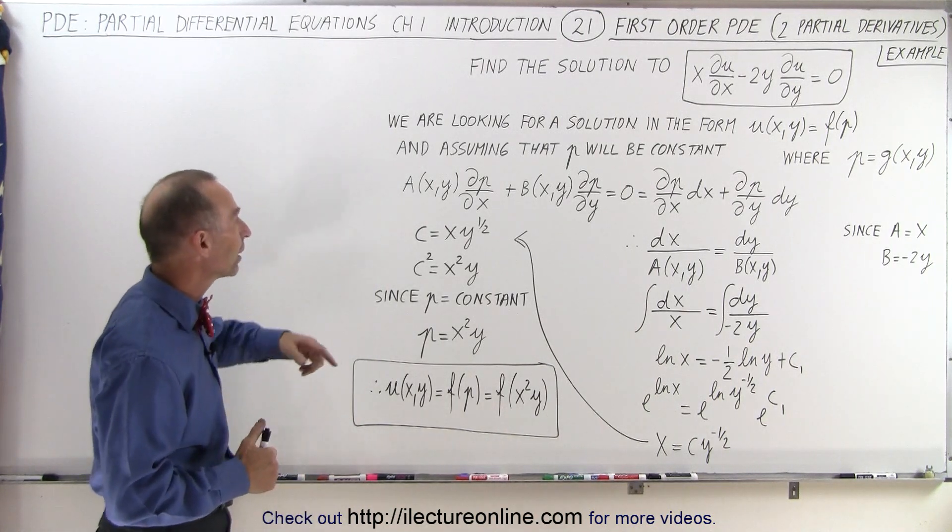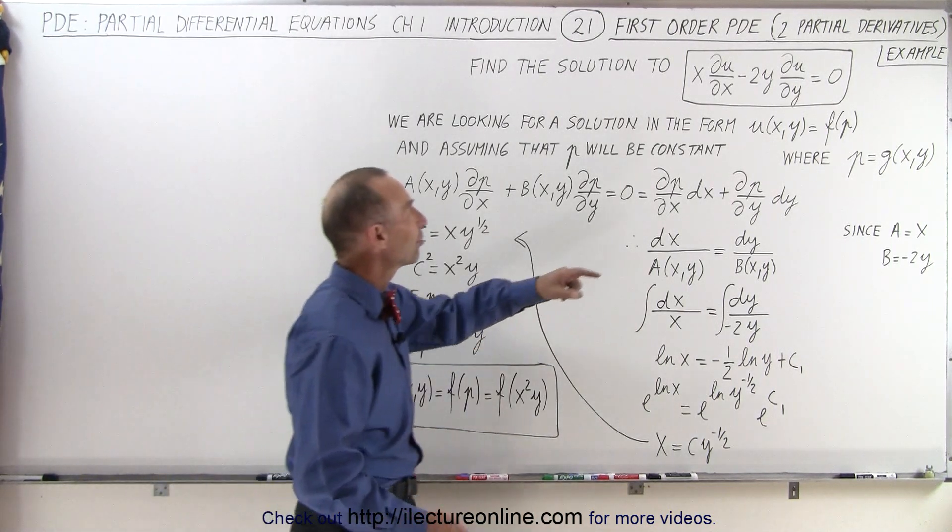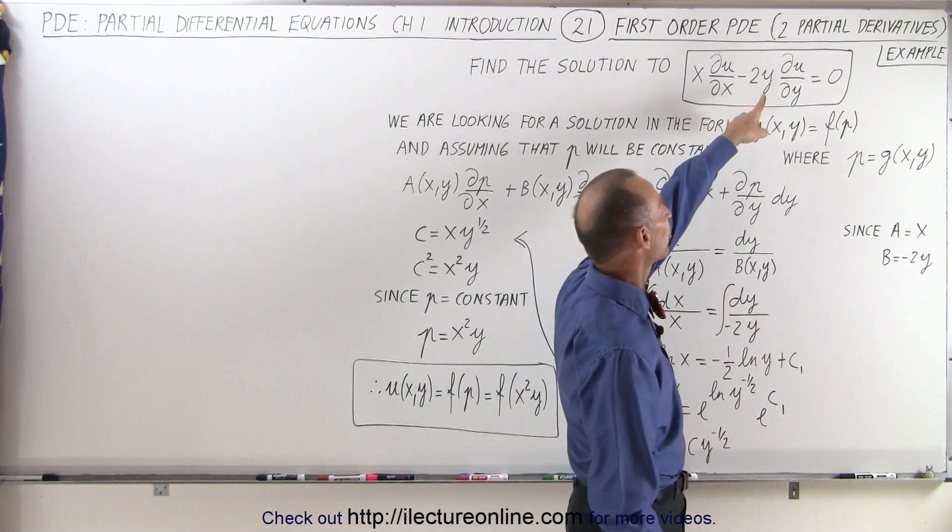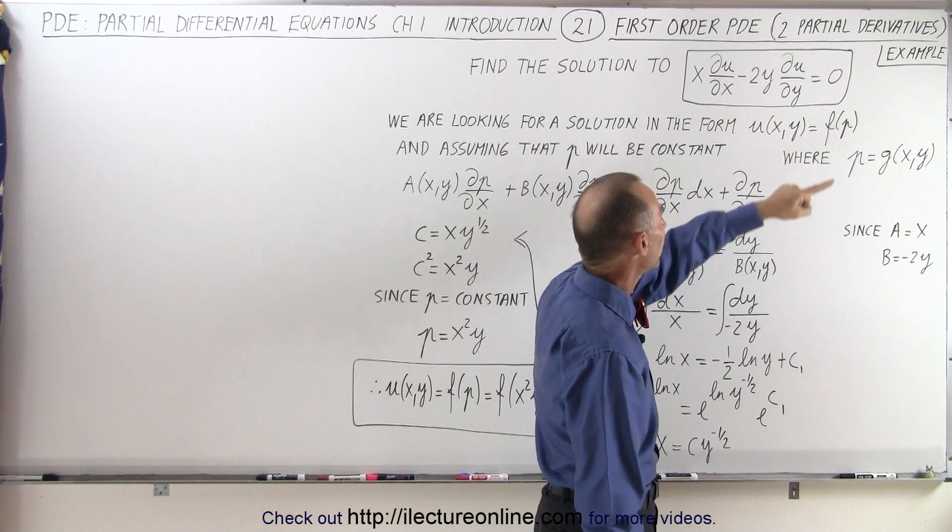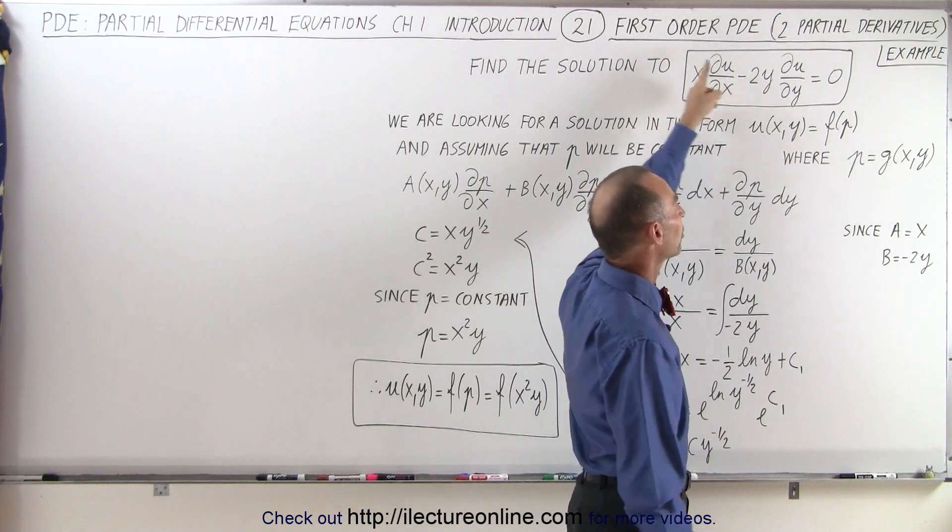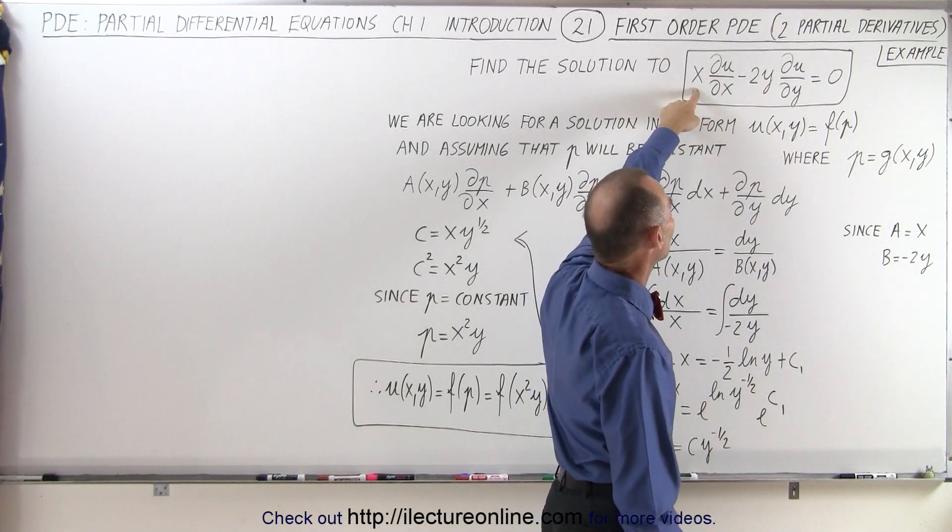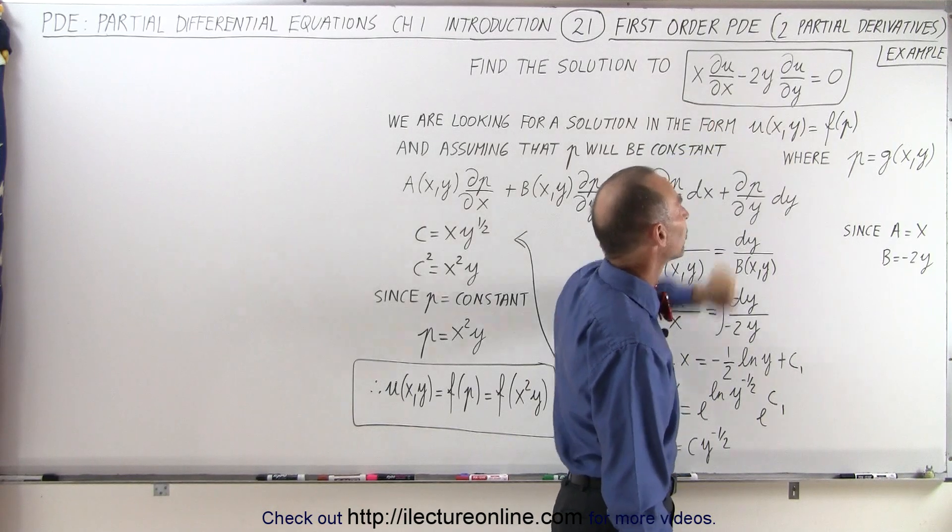In the previous video we realized that when we have the special case with two partial derivatives but c and r equals zero, we end up with a differential equation that looks like this where a is equal to x and b is equal to minus 2y.